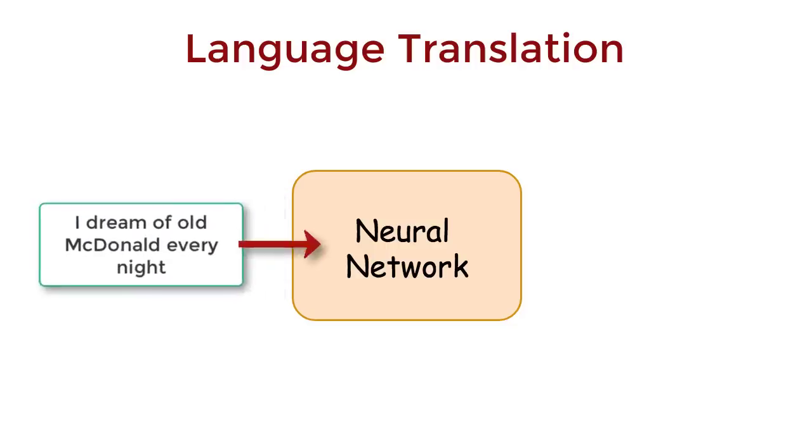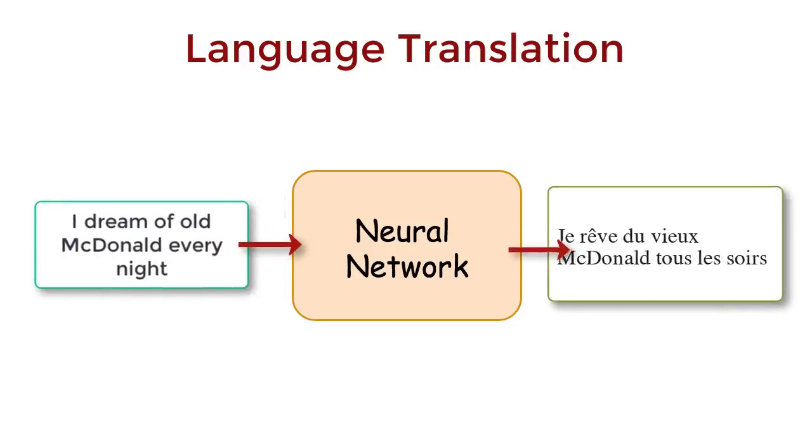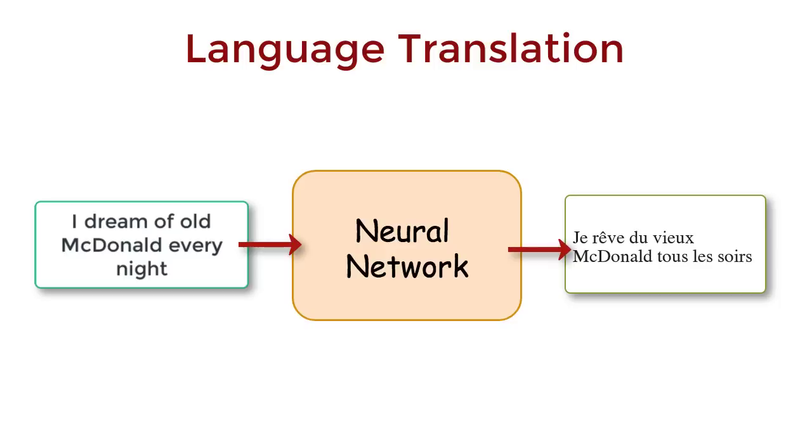Some English sentence is the input, and it should spit out some French sentence. The first thing you notice, the input and outputs are both sentences, or a sequence of words. But computers don't understand sentences like humans do, so we need to convert it into a form that they do understand, and that's numbers.